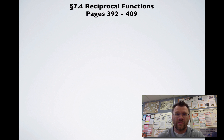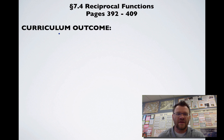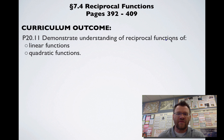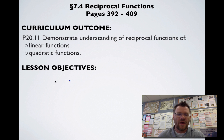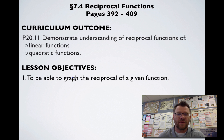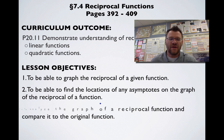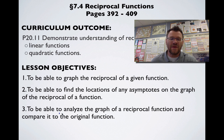Today's topic is 7.4, reciprocal functions, on pages 392 to 409 in your text. Our curriculum outcome is to demonstrate understanding of reciprocal functions of linear functions and quadratic functions. Our lesson objectives today: number one, to be able to graph the reciprocal of a given function; number two, to find locations of any asymptotes on the graph of the reciprocal of a function; and number three, to analyze the graph of a reciprocal function and compare it to the original function.